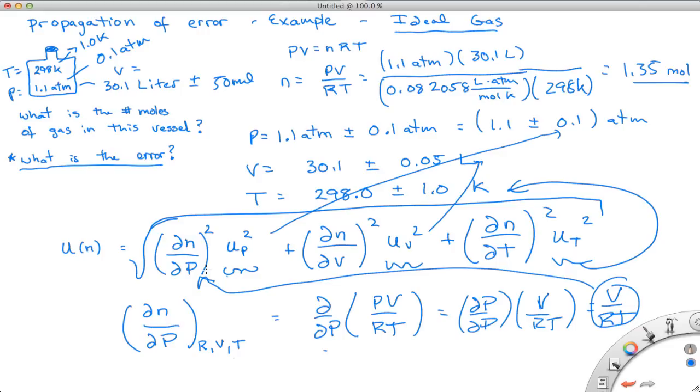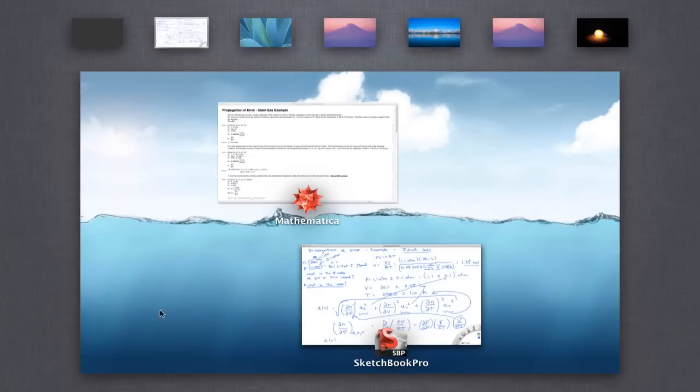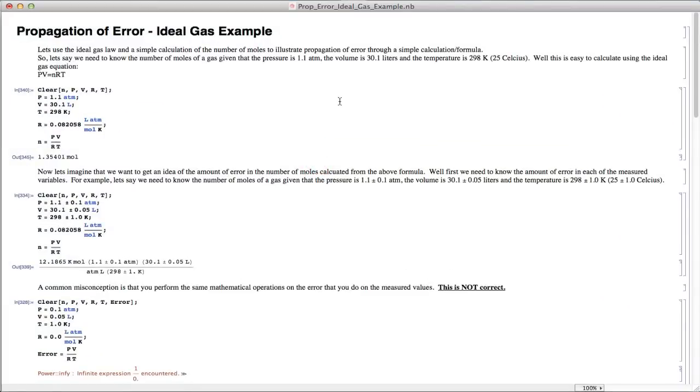So to show you this, I want to show you that in Mathematica, because I think this is the way a lot of you will formally use it. But I think you can see how we could look at each of the partials now, we could plug in these variables, and quickly get the overall uncertainty in this measurement. And I'll show you in Mathematica how we do that.